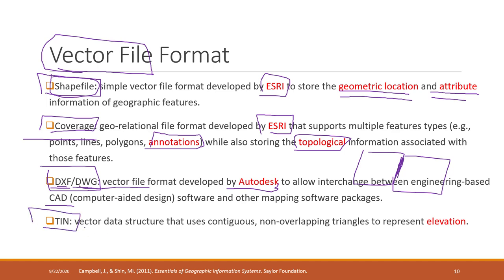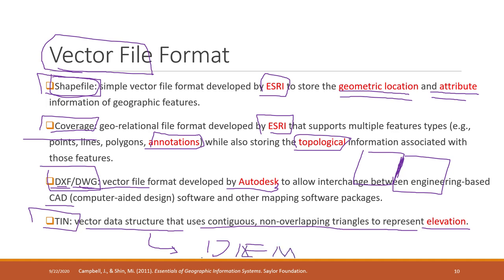The last commonly used vector format is called TIN — Triangulated Irregular Network. TIN supports elevation data and uses continuous non-overlapping triangles to represent elevation. It can be converted from a DEM — Digital Elevation Model. TIN is another commonly used vector data format, normally used to represent elevation.